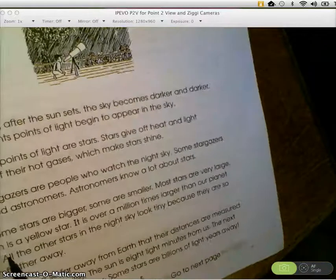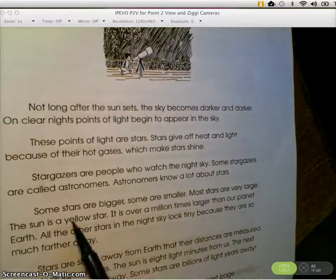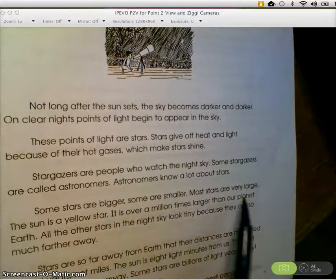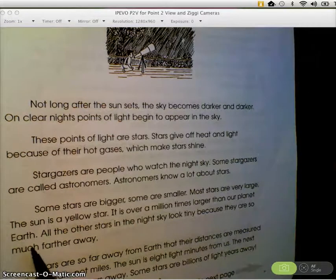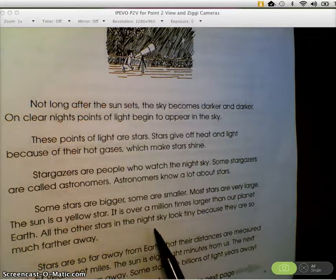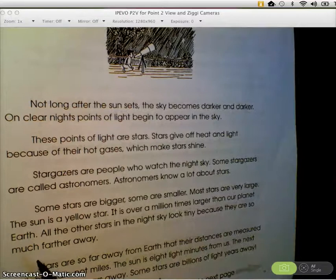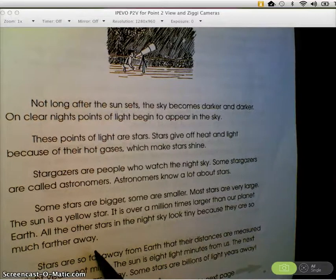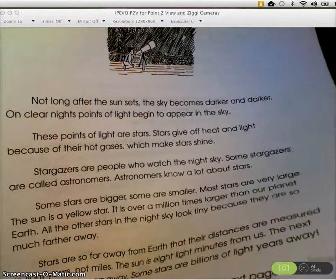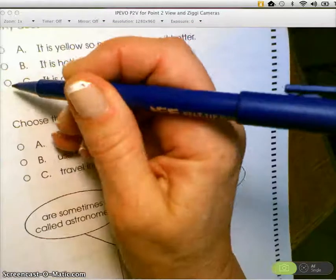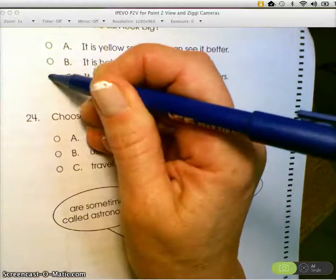It says right here, some stars are bigger, some are smaller. Most stars are very large. The sun is a yellow star. It is over a million times larger than our planet Earth. All the other stars in the night sky look tiny because they are so much farther away. So you have to draw the inference that the sun is closer. And that's why it looks bigger. So the answer to that one is C. It is closer.